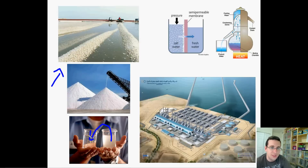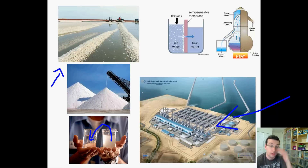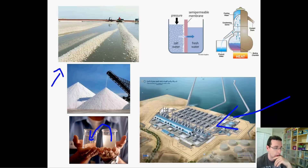These processes are all called desalination — the process of removing the salt from the water — and there are several ways of doing it. You can see a desalination plant right here, and they actually get the salt out of the water at the same time, so they get twice the resources and sell them both.